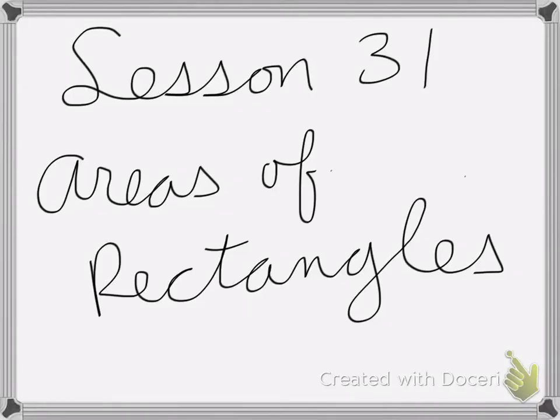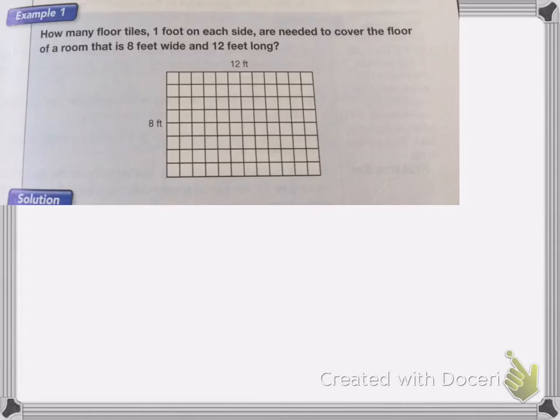Alright, so lesson 31 is on areas of rectangles. So if we have this problem, how many floor tiles, one foot on each side, are needed to cover the floor of a room that is 8 feet wide by 12 feet long?